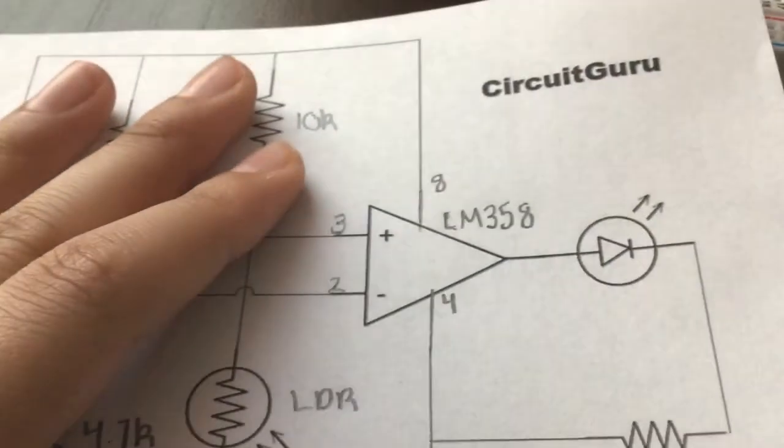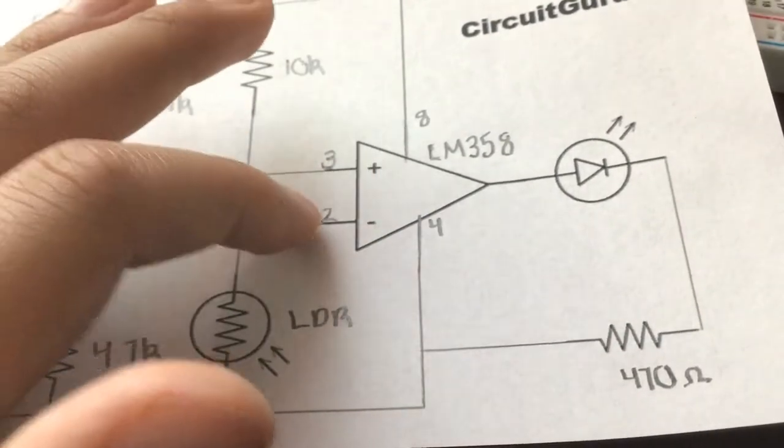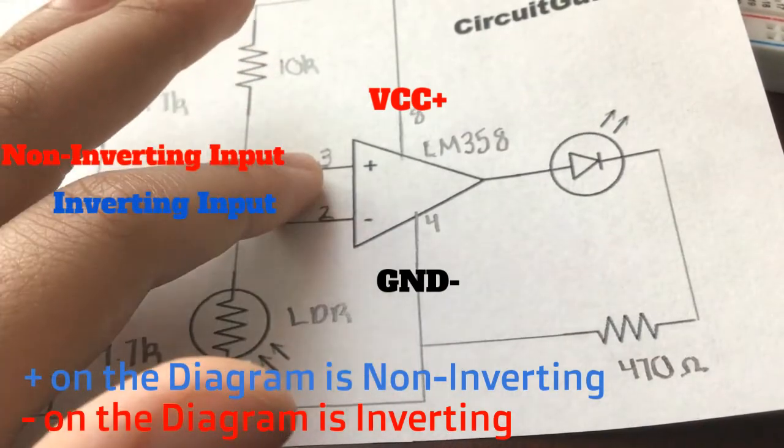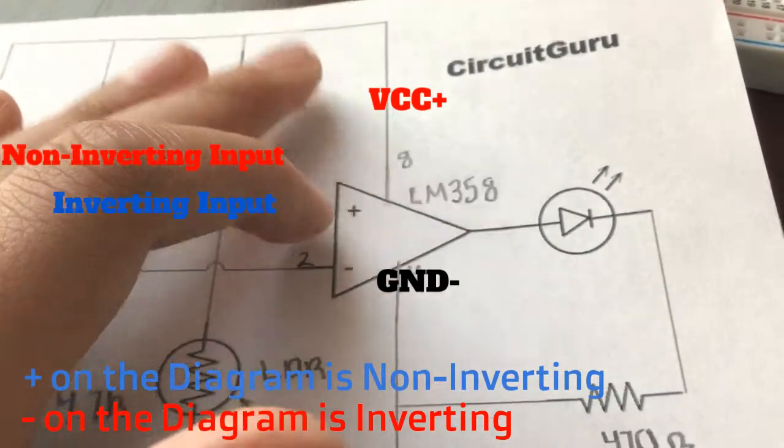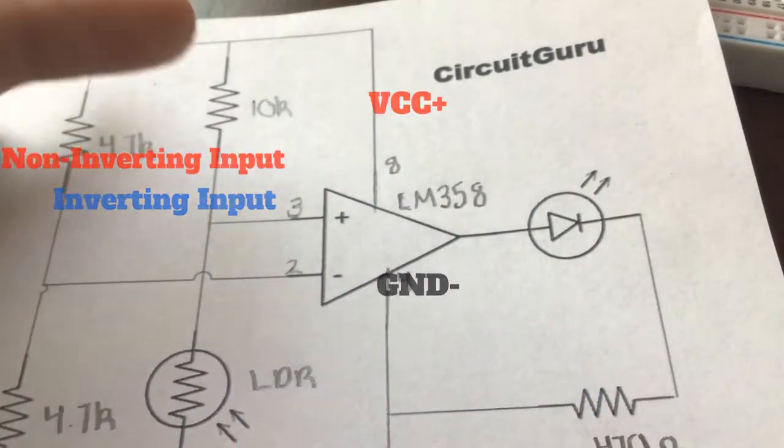They're represented by triangles in the circuit diagram. This right here is pin three, the positive, and this is pin two, the negative, or the inverting and non-inverting. Then pin eight goes to that, and you see the diagram is just like this. Right here is the output. It looks like one of the voltage gates because it takes two inputs and spits out an output like them.